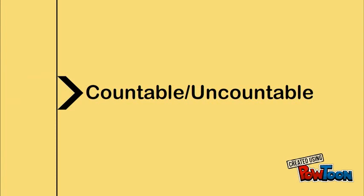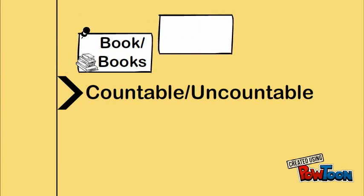Firstly, you should determine whether the noun you are using is countable or uncountable. A noun is countable when it can be made into a plural. Examples of countable nouns include book or books and dog or dogs.